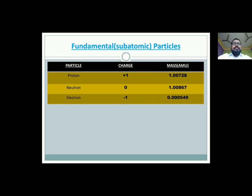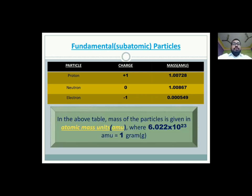Now, we have a table of the subatomic particles with charge and mass. For proton, its charge is 1, that is positive, and mass is 1.00728 atomic mass unit. For neutron, charge is 0, the mass is 1.00867 atomic mass unit. And for electron, the charge is minus 1 and the mass is 0.000549 atomic mass unit. Now, you might wonder, what the atomic mass unit is? See, AMU, which full form is atomic mass unit, where 6.022 into 10 to the power 23 AMU is equal to 1 gram.